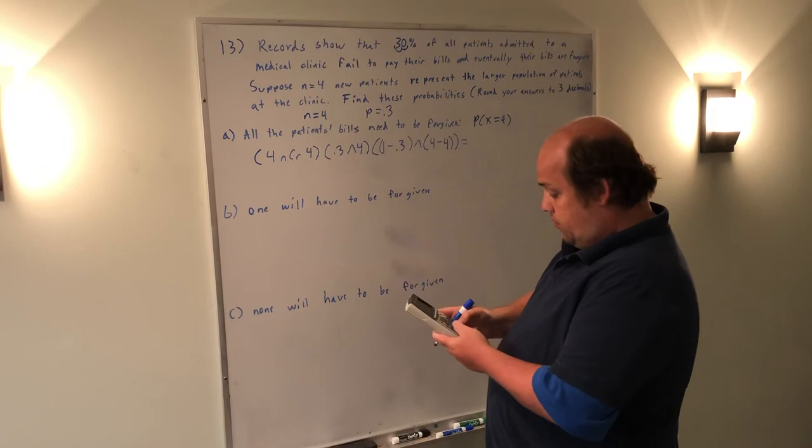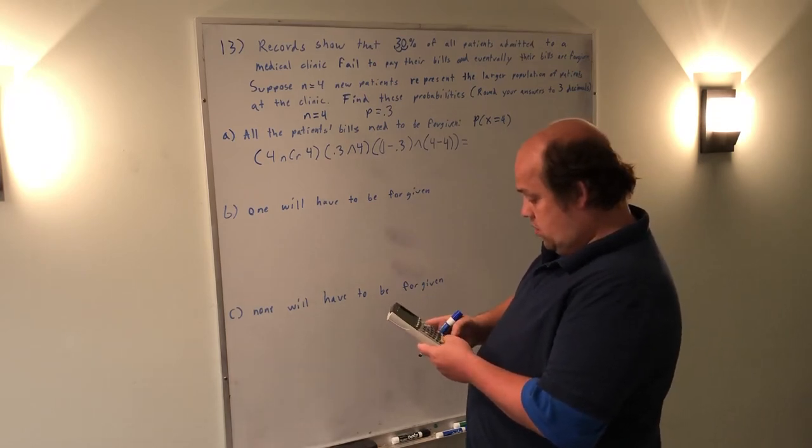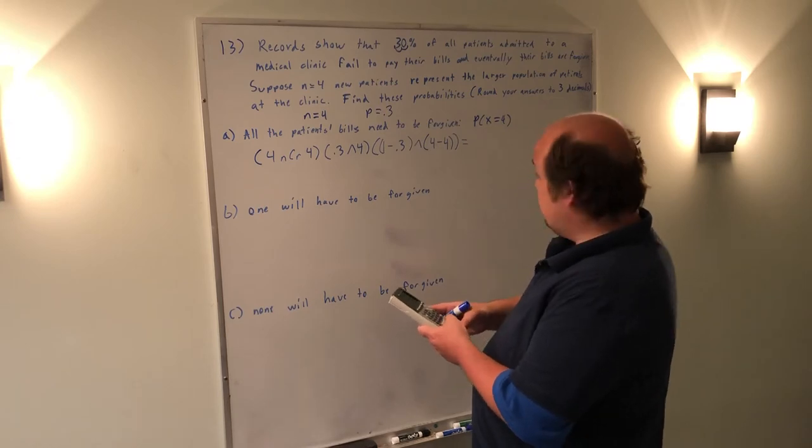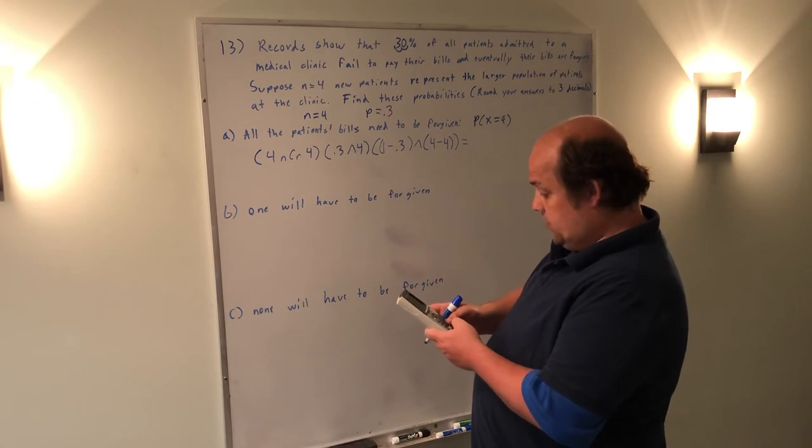So put this in the calculator, parentheses, 4 NCR 4, close parentheses, new parentheses, 0.3 to the power of 4, close parentheses.